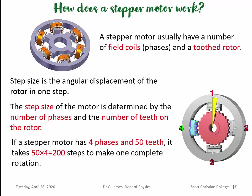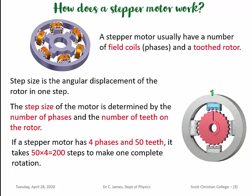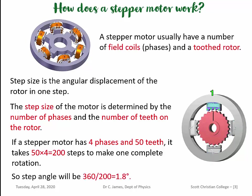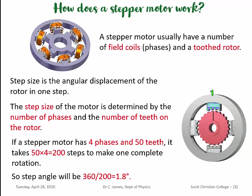Here you see four phases and 50 teeth in the rotor. The total number of steps will be 50 multiplied by 4, which equals 200 steps. That means for a single step, the angle will be 360 degrees divided by 200 steps — that is 1.8 degrees. Let us start designing a system to control this stepper motor.